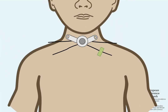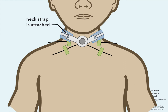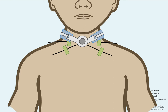These sutures will be removed later. Finally, a neck strap is attached to hold the tracheal cannula in place. After surgery, the child is kept on the ward, where their parents are taught how to take care of the tracheal cannula at home. Please contact your own clinical team for the local protocol.